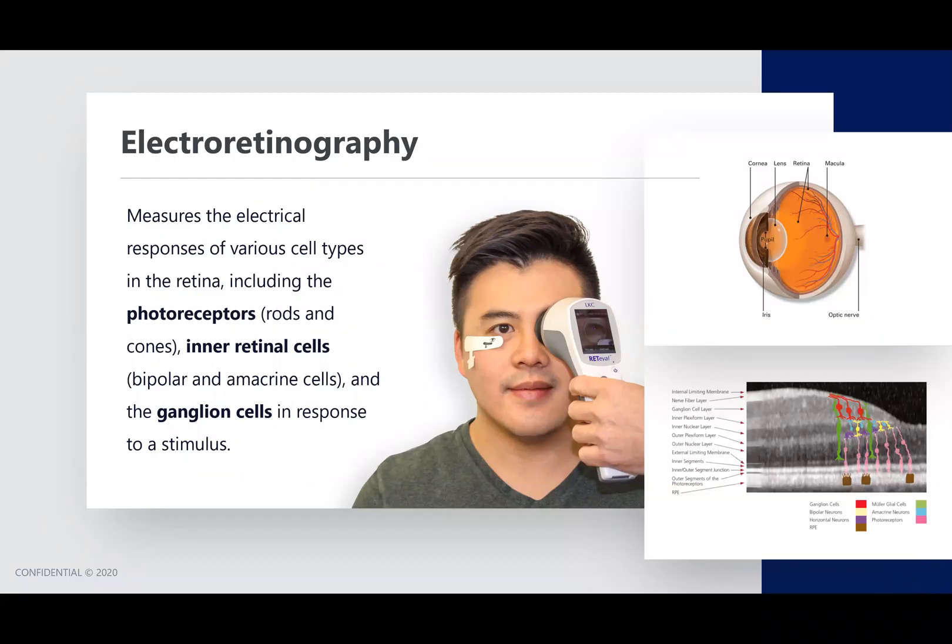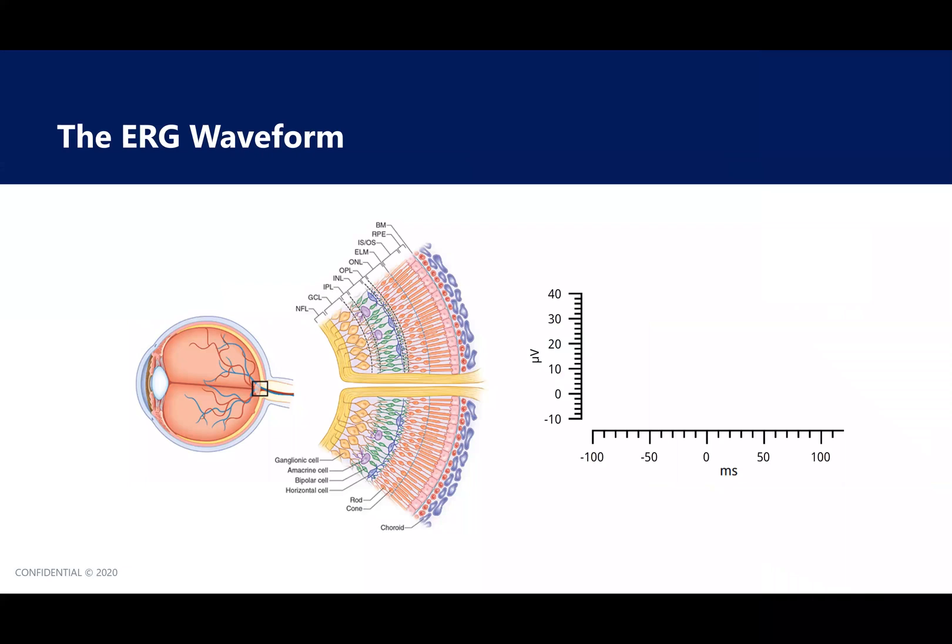Electroretinography measures the electrical responses of various cell types in the retina, including the photoreceptors, inner retinal cells, and the ganglion cells in response to a stimulus. If you look at this animation, on the left-hand side is a cross-section of the eye and retina, and on the right-hand side is the waveform generated by the ERG measurement. On the x-axis, it measures implicit time or time of response in milliseconds, and on the y-axis, it measures strength of response or amplitude in microvolts.